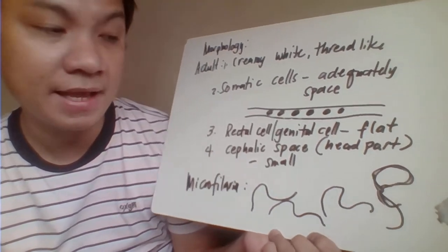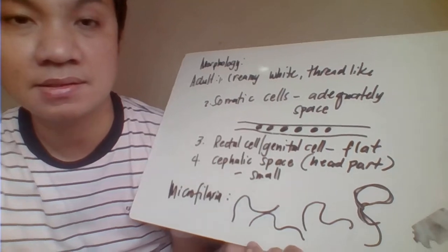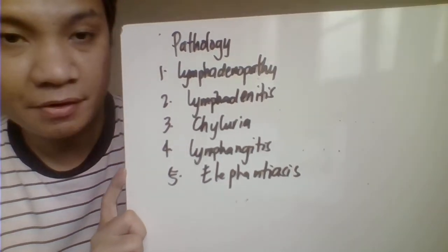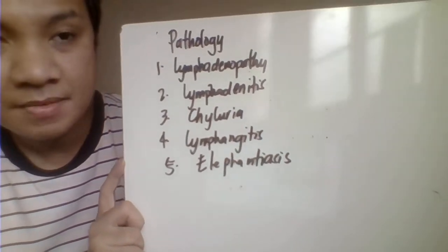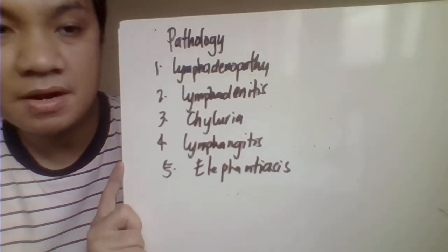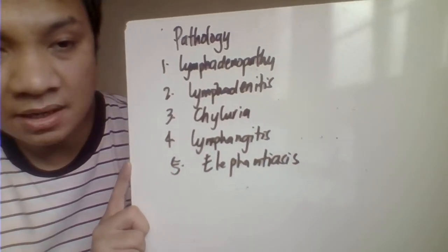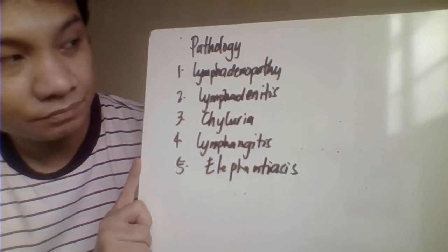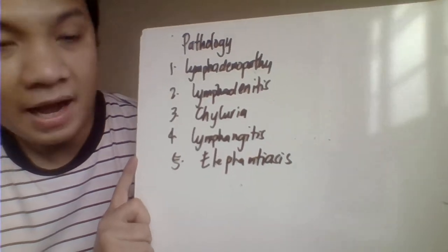The microfilaria of Wuchereria bancrofti is described as having a graceful appearance. The manifestations of infection caused by Wuchereria bancrofti include lymphadenopathy — swelling of the lymph nodes — and lymphadenitis — inflammation of the lymph nodes, as the lymph nodes trap the parasite being a secondary lymphoid organ.